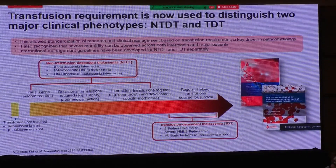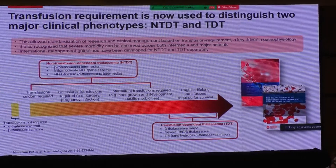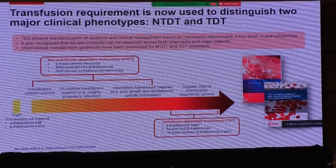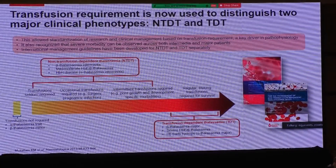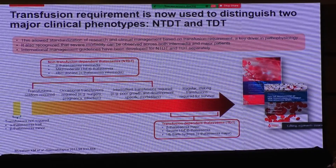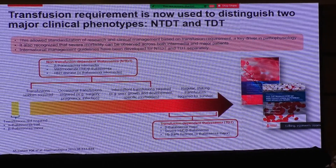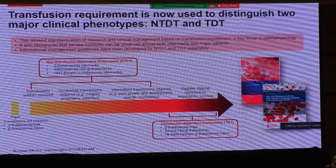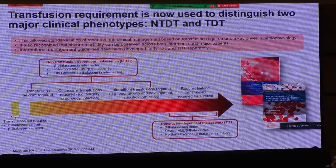At one end, you have thalassemia minor; at the other end, you have TDT — transfusion-dependent thalassemia. These are patients who require blood transfusion continuously for survival and are unable to survive without it. This is what we used to call thalassemia major. Now we call the middle group non-transfusion-dependent thalassemia, NTDT, which includes beta-thalassemia intermediate, mild to moderate hemoglobin E-beta, and hemoglobin H disease.